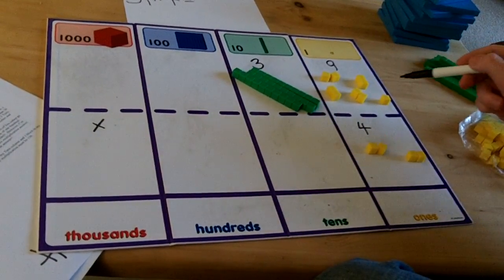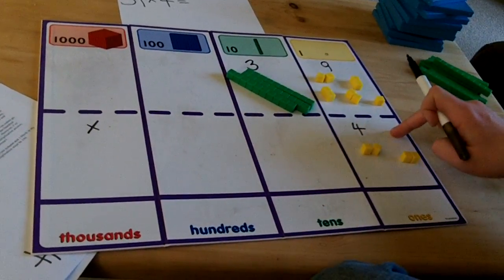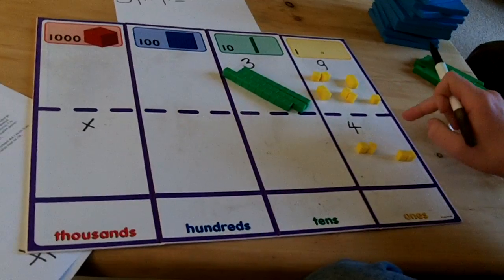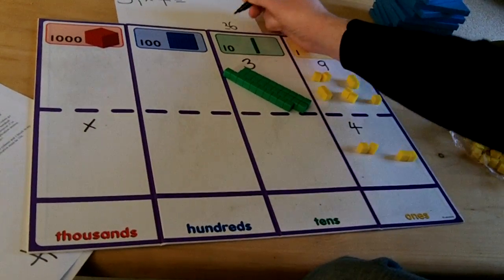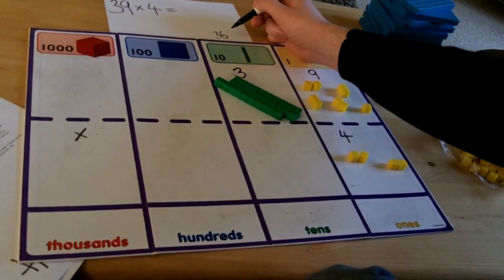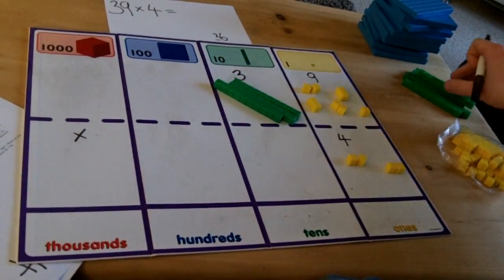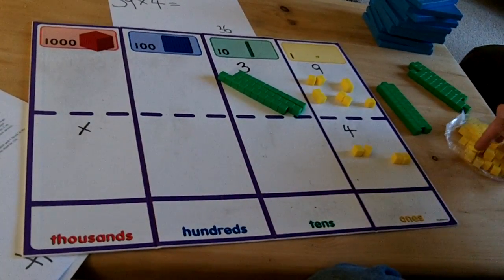First I must solve the multiplication in the ones column. This is 9 multiplied by 4. I know that 9 multiplied by 4 equals 36. 36 has got 3 tens and 6 ones so I will need 3 rows of 10 cubes and 6 ones.